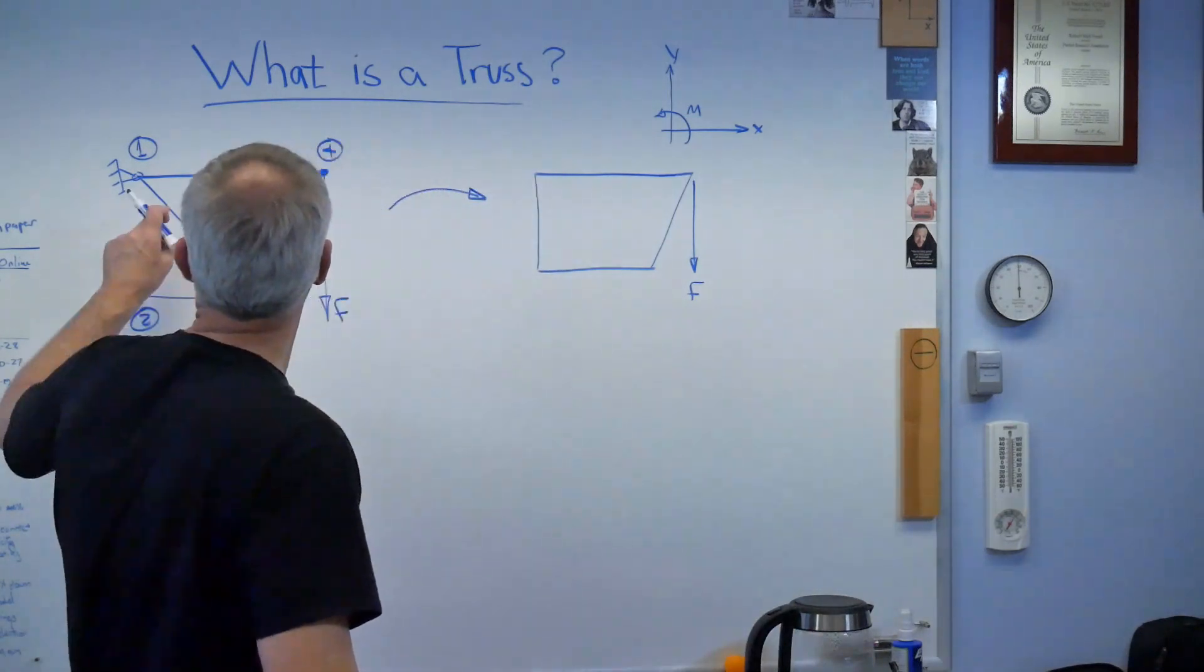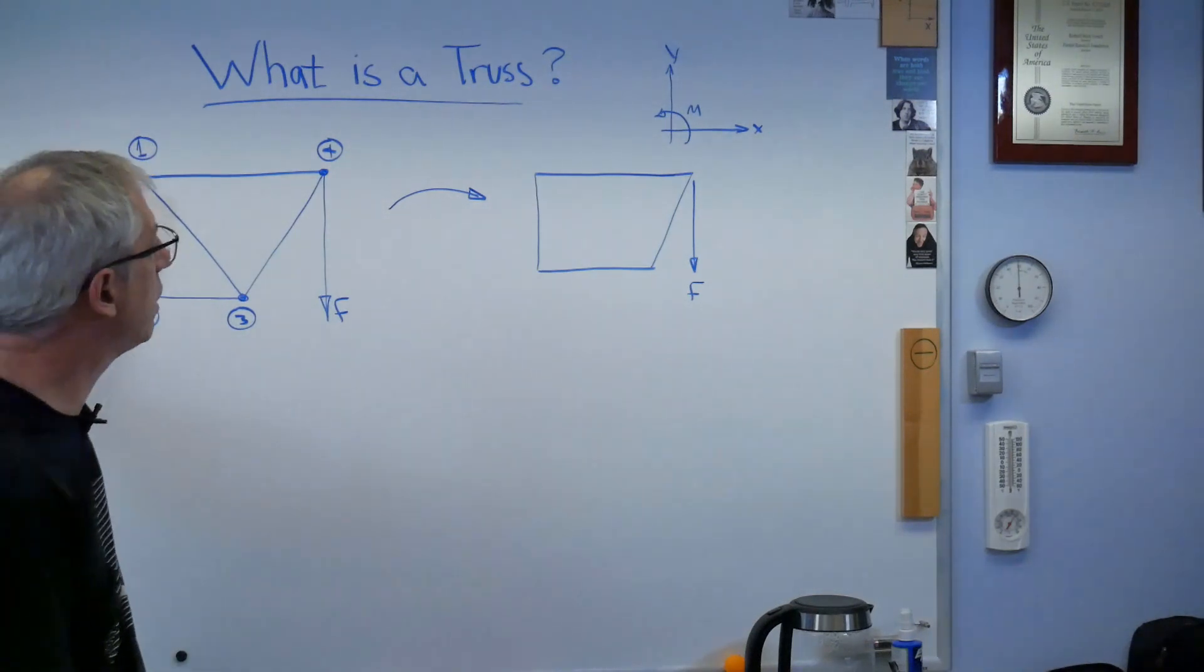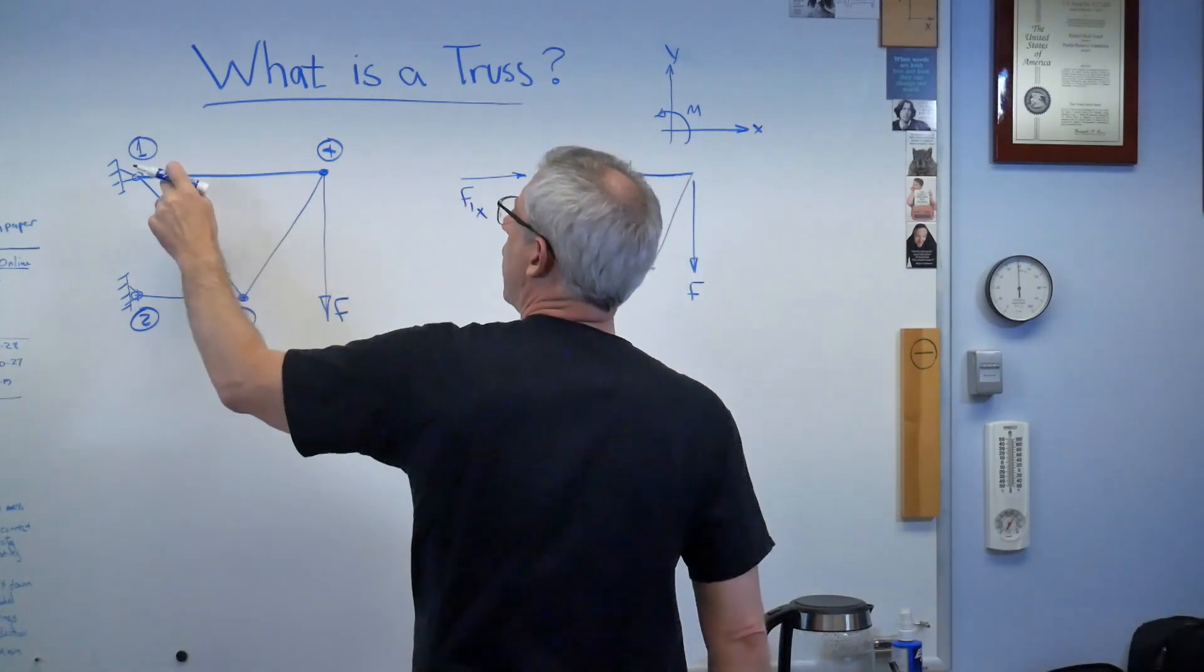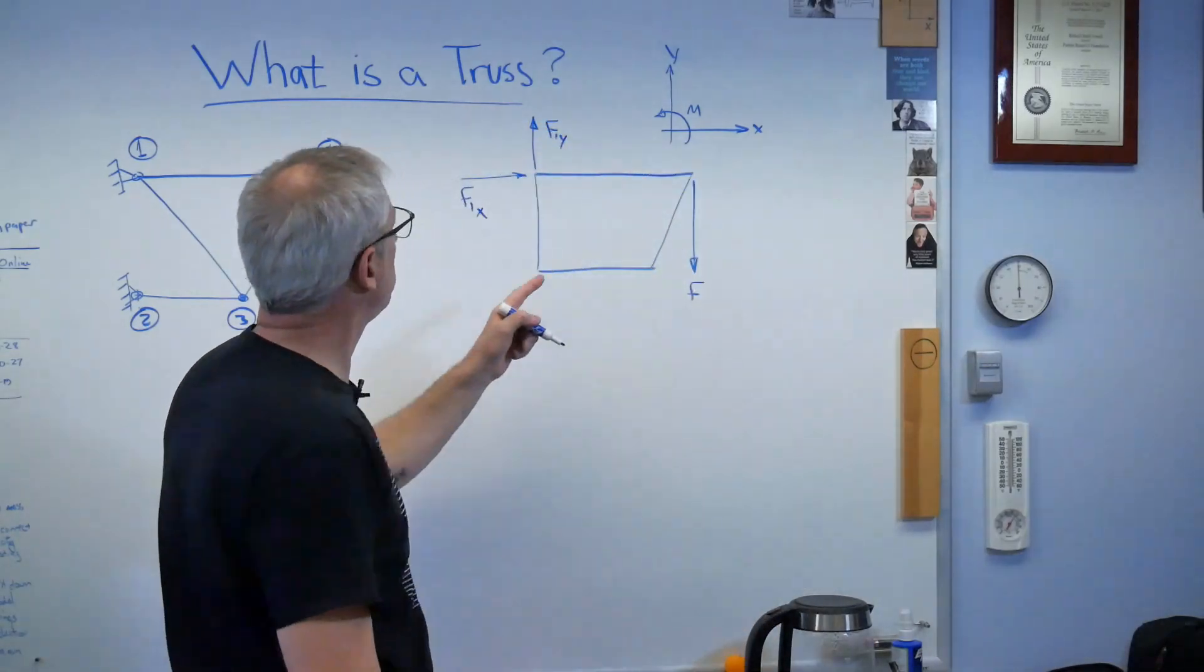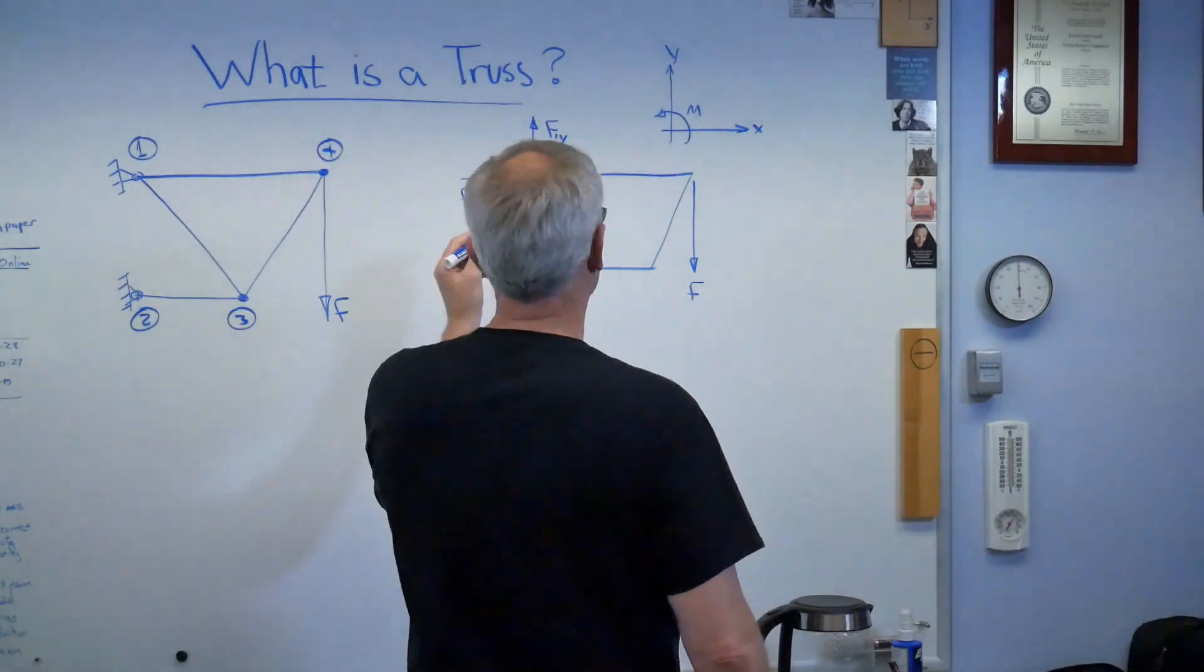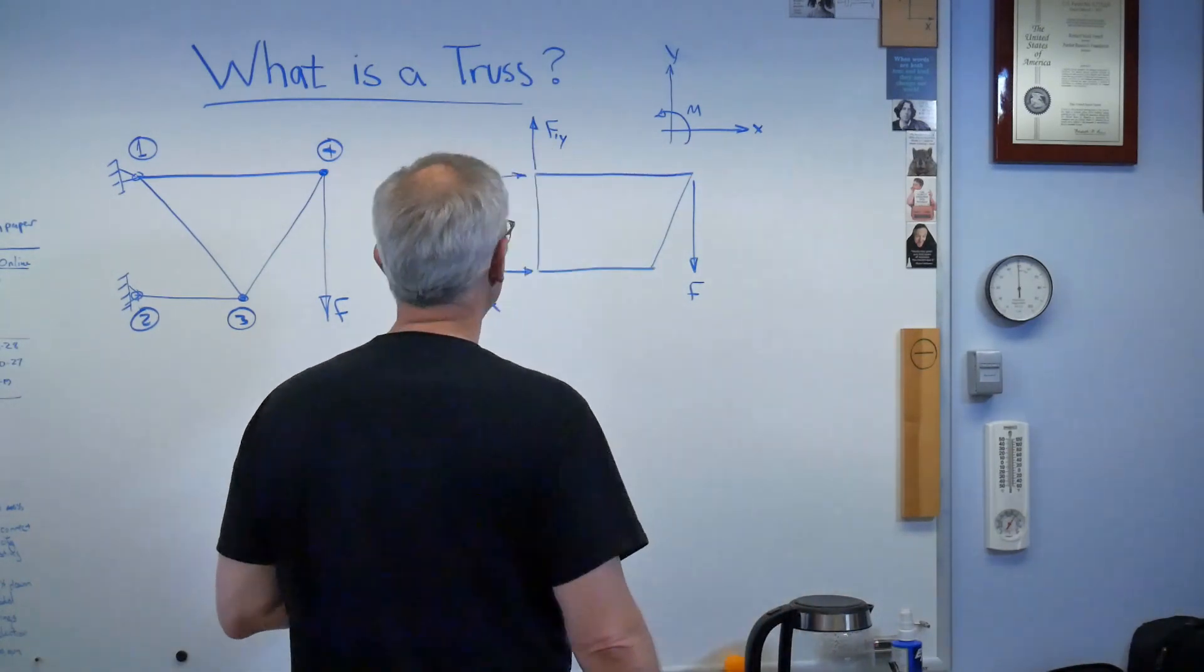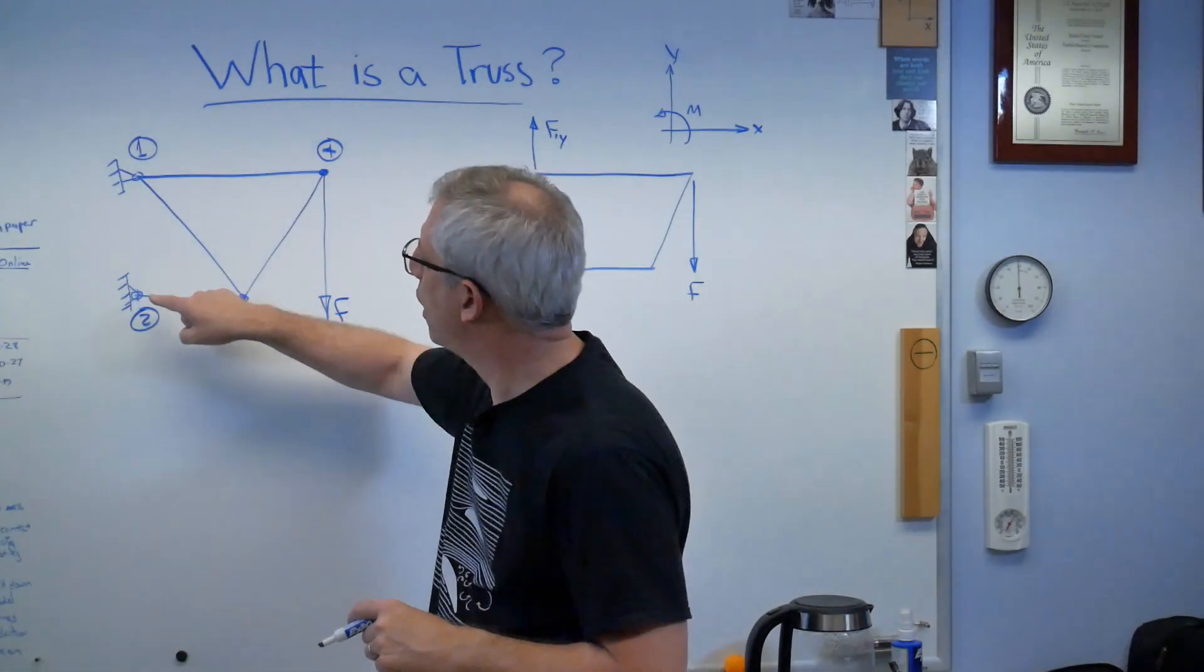So now I need to do a little bookkeeping here. Let's find the forces acting on my structure here at this interface, at the place where it's connected. I'm going to call this F1X, F at grid point one in the X direction, and I'm going to call this F1Y. So the force is at grid point one in the Y direction. And you can see that bookkeeping is important here. The more complicated the structures get, the more involved this gets.